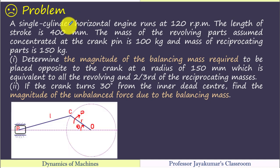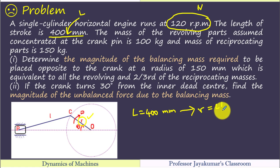The problem goes like this. A single cylinder horizontal engine runs at 120 rpm. The length of the stroke is 400 mm. When stroke value is given, we can find crank radius R value. R is equal to stroke by 2. So the mass of the revolving parts assumed concentrated at the crank pin is 100 kg and mass of the reciprocating parts is 150 kg. So we have two masses here. One is revolving mass. Another one is reciprocating mass. So very interesting here.